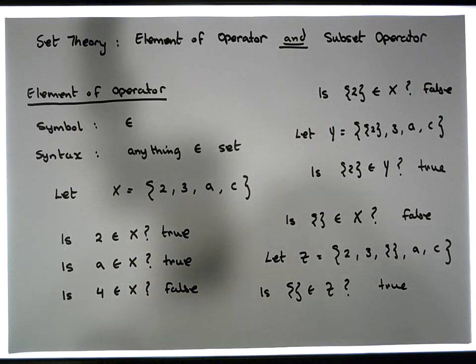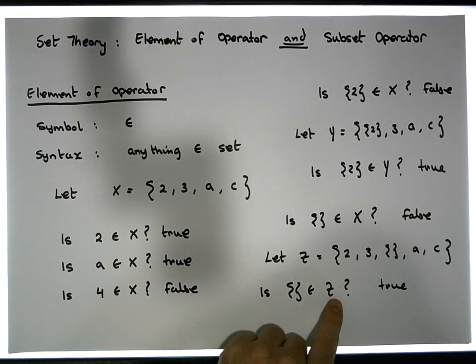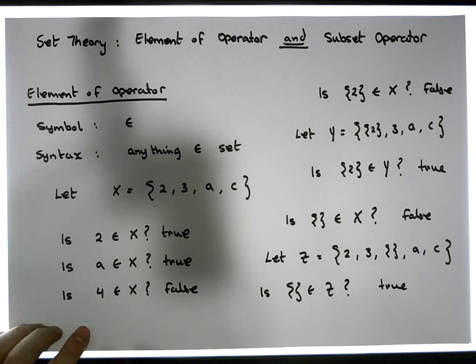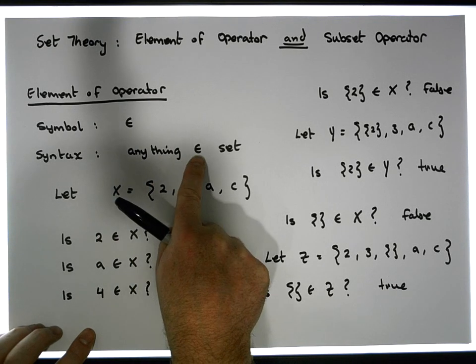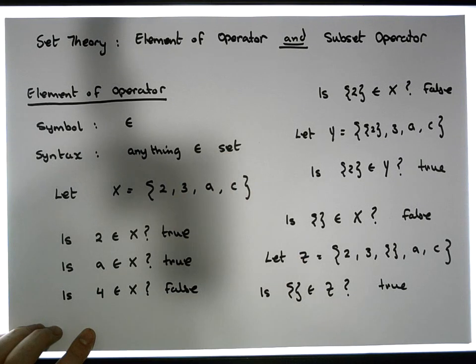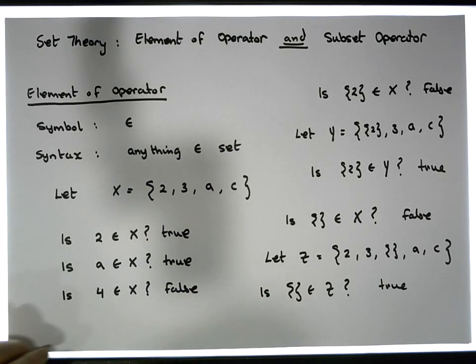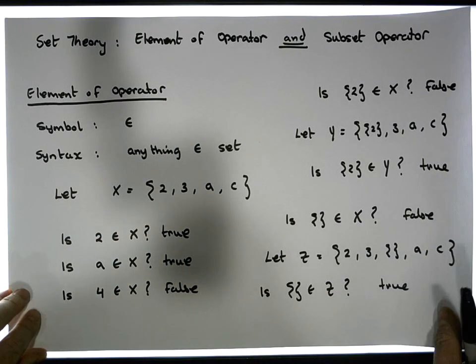I'm sure there will be questions about why the empty set is not an element of set X but is an element of set Z. There's a subtle difference between the element-of operator and the subset operator. The element-of operator tests to see whether what's listed on the left is also listed within the structure on the right — in other words, is it a member of the set? That's how the element-of operator works. Now let's look at the subset operator.